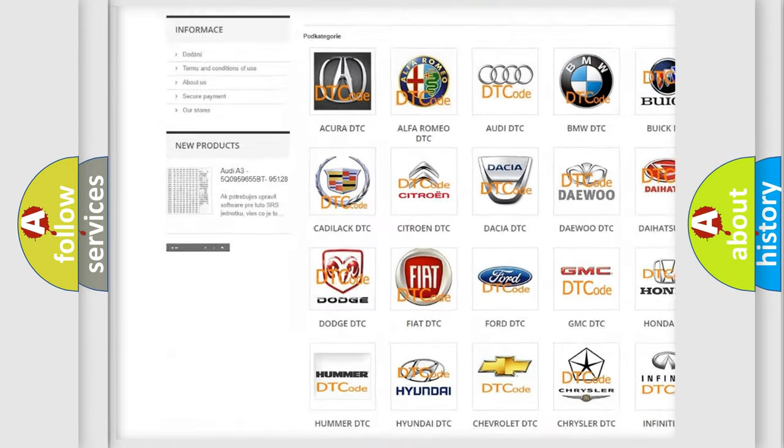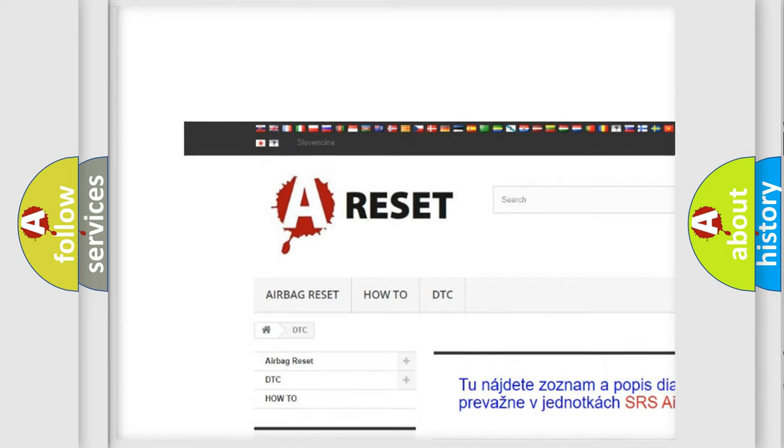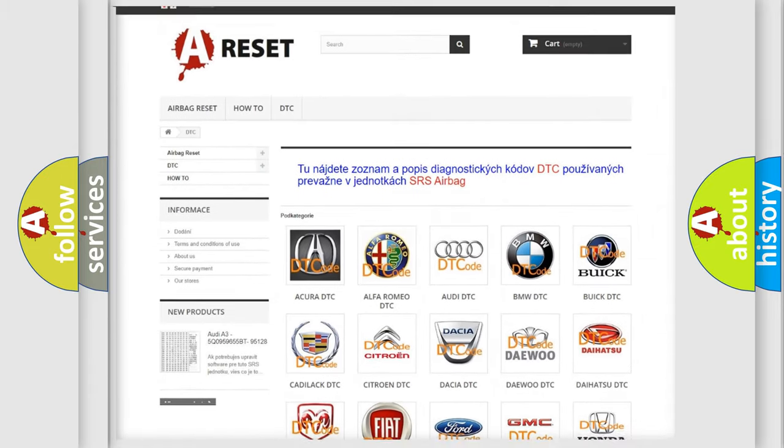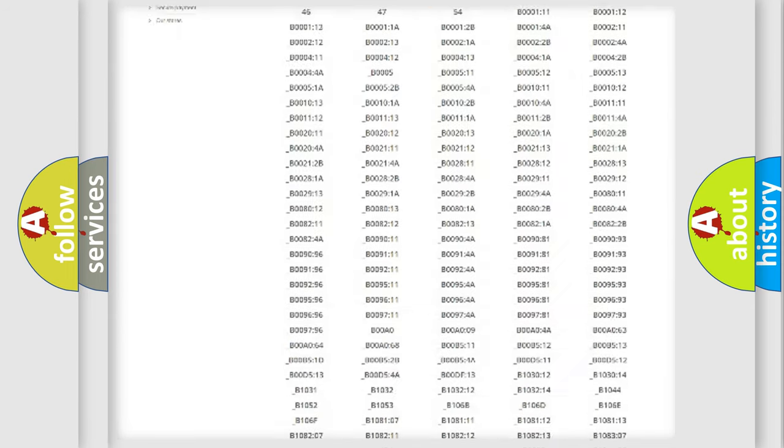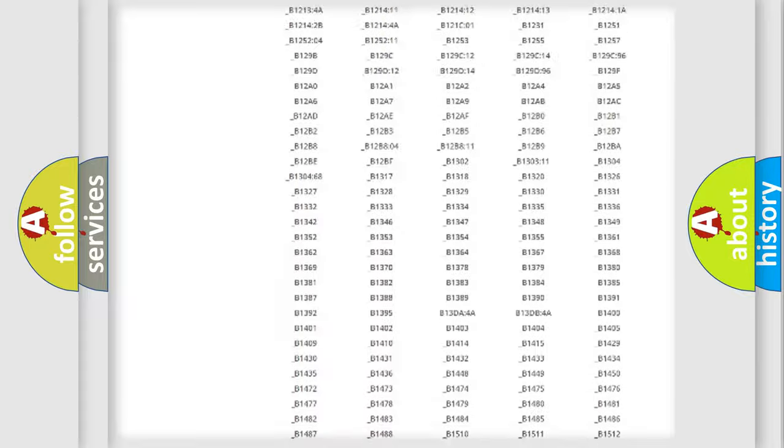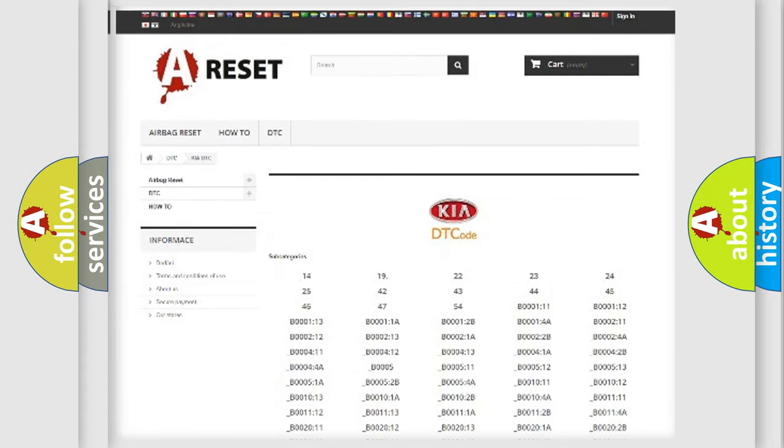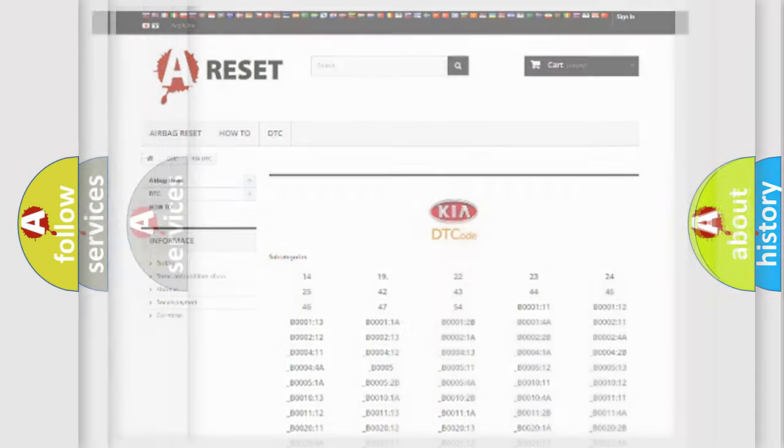Our website airbagreset.sk produces useful videos for you. You do not have to go through the OBD2 protocol anymore to know how to troubleshoot any car breakdown. You will find all the diagnostic codes that can be diagnosed in KIA vehicles, and many other useful things.